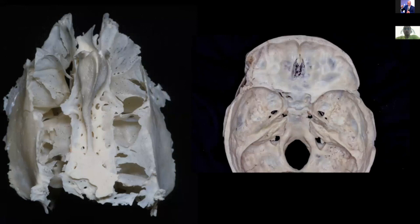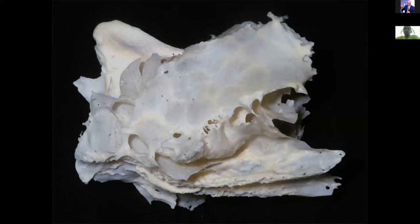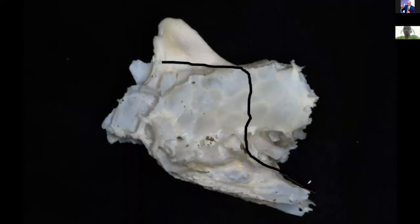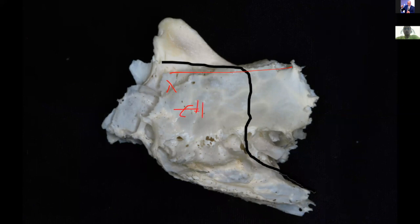Looking from above: the crista galli is at midline, with the cribriform plates as the narrow area just lateral to it. Lateral to the cribriform plates is the fovea ethmoidalis. To reach the most lateral border of the anterior midline skull base, we need to work through this bone. The mid portion of the middle turbinate attachment to the skull base is called the basal lamella, which is important. In front of the basal lamella are the anterior ethmoidal air cells, also called the ethmoid bulla. Behind it are the posterior ethmoidal air cells.